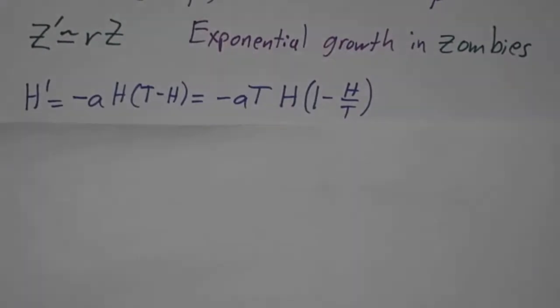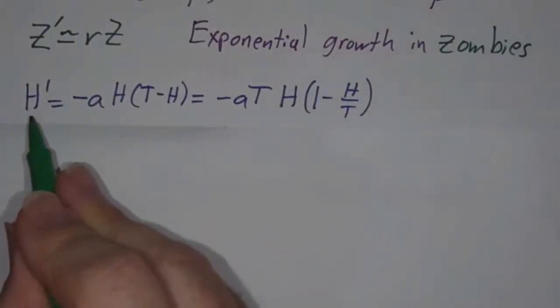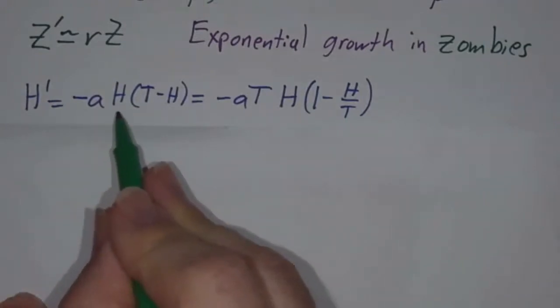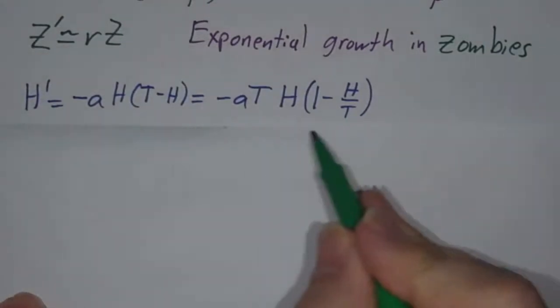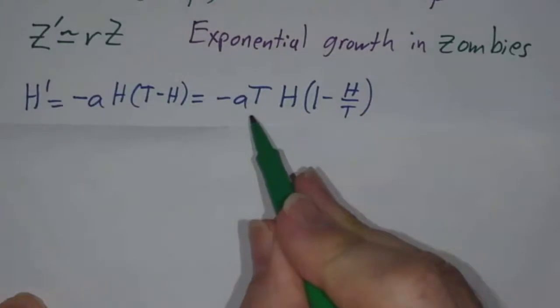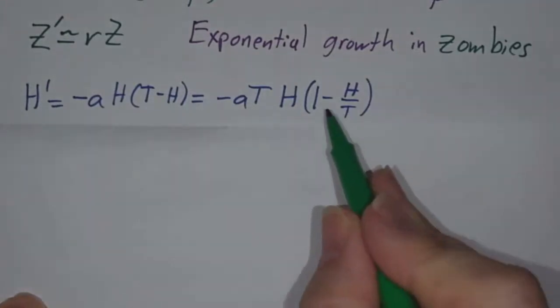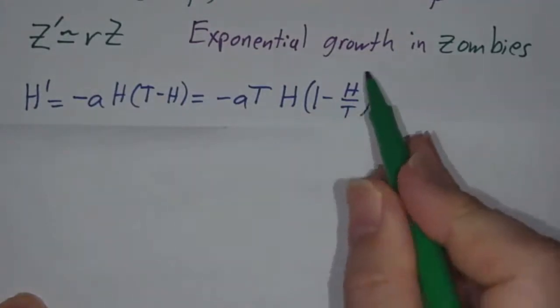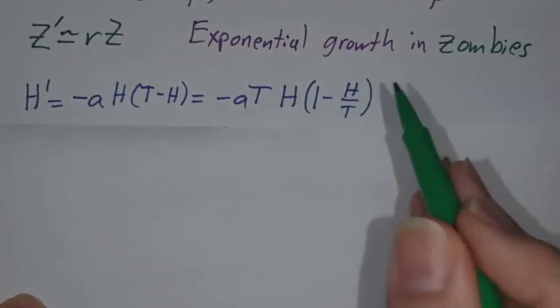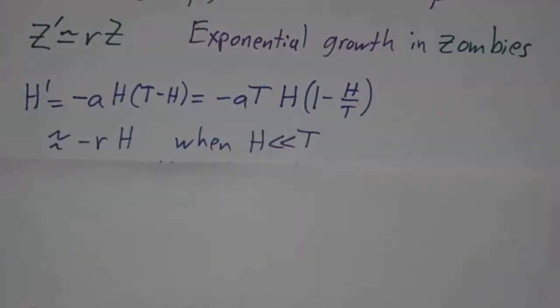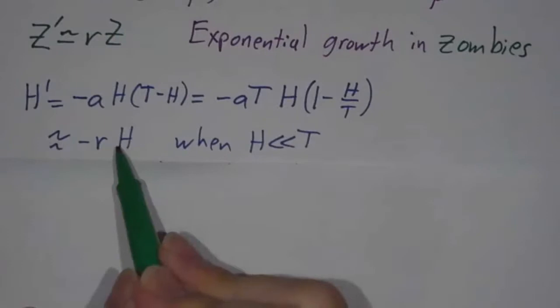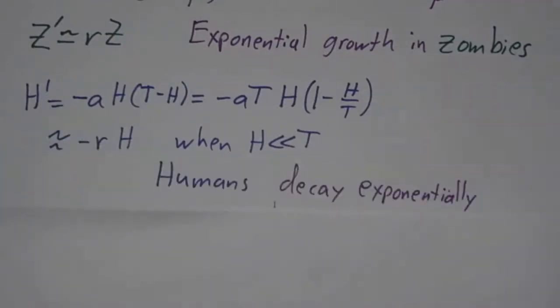In the later stages, you start to run out of humans. The rate at which the number of humans changes is -aH(T-H) = -aT*H(1 - H/T). When you start running out of humans, 1 - H/T becomes very close to 1. So in the later stage of the epidemic, this is approximately -RH. So in the later stages, the number of humans goes as e^(-RT).